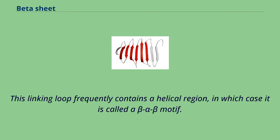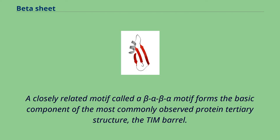This linking loop frequently contains a helical region, in which case it is called a beta-alpha-beta motif. A closely related motif called a beta-alpha-beta-alpha motif forms the basic component of the most commonly observed protein tertiary structure, the TIM barrel.